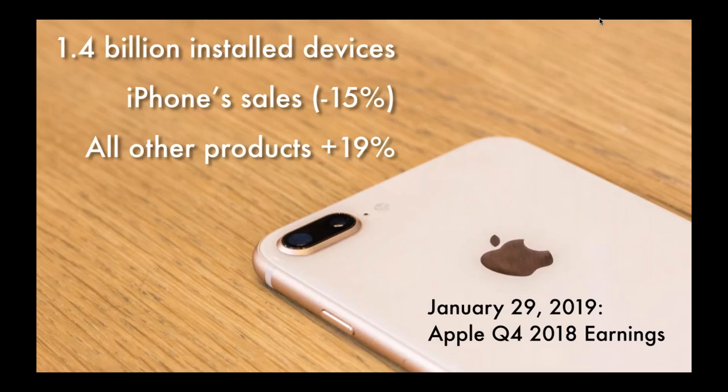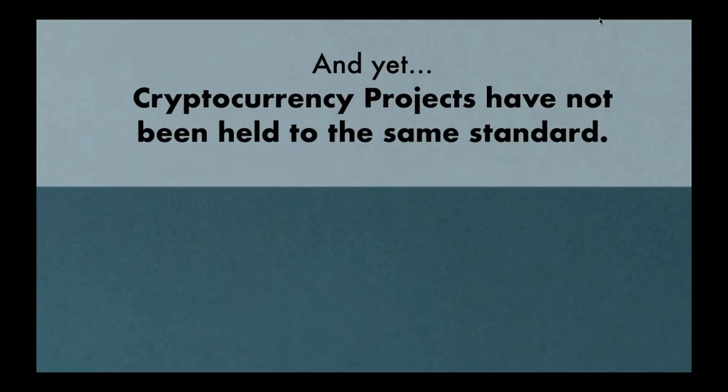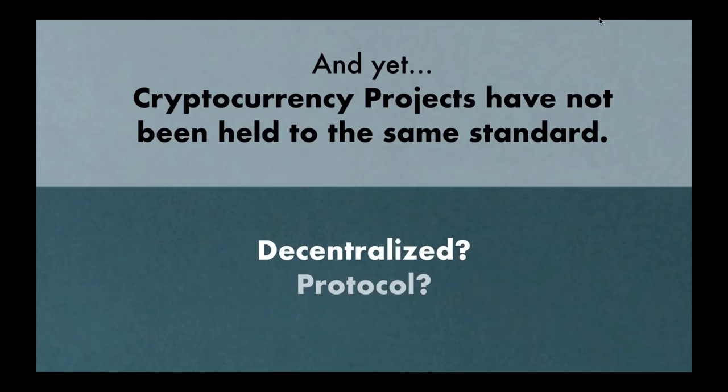In what is now a tradition for quarterly earnings calls, they describe their business in terms we all understand — customers, products, growth, earnings. Public companies provide this information because they are truly the foundations for success. And yet crypto projects to date have not been held to the same standard. We use terms in this industry like decentralized, protocol, foundation, and they seem to be overlooking some of the main objectives of what these organizations need to do to succeed.